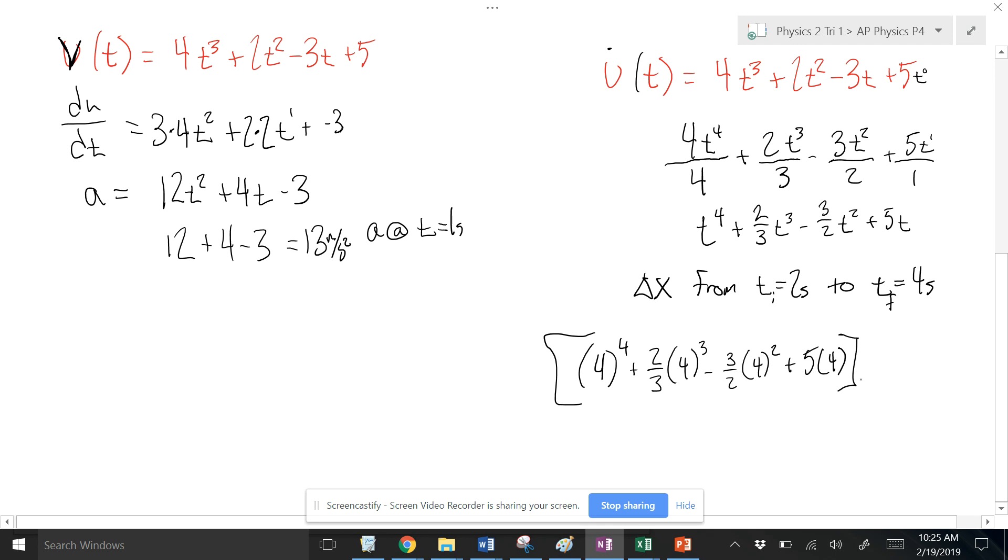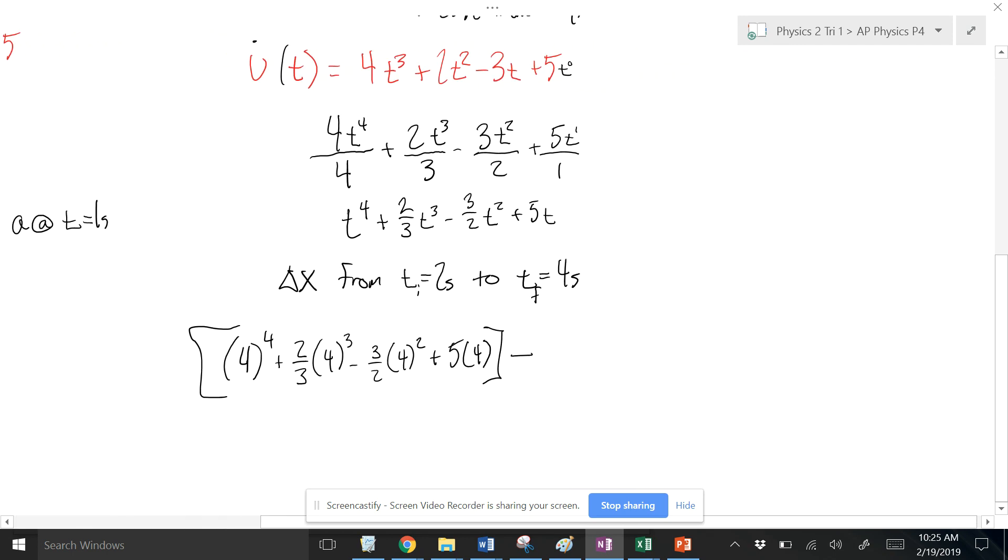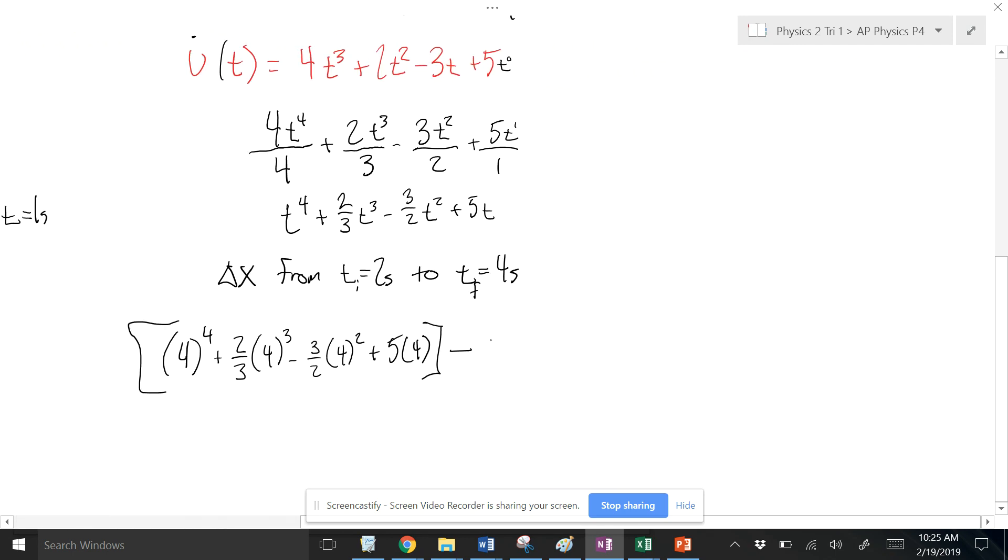And then I'm going to subtract from that 2 to the 4th plus 2/3 times 2 cubed minus 3/2 times 2 squared plus 5 times 2. So those are my bounds of integration or whatever math people call that.